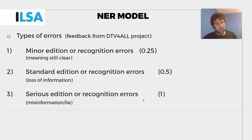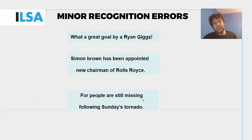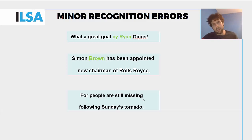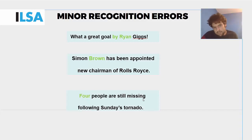Looking at minor recognition errors, these carry a scoring of minus 0.25 and are errors where the meaning of the original is not really affected. For example, 'what a great goal by A Ryan Giggs' instead of 'what a great goal by Ryan Giggs' — the insertion of 'a' has no massive impact on comprehension. Similarly, 'simon brown' with a missing capital B, or 'four people' where the preposition and number are confused — most viewers can understand what the original meaning was. These are called minor recognition errors, penalized with only minus 0.25.